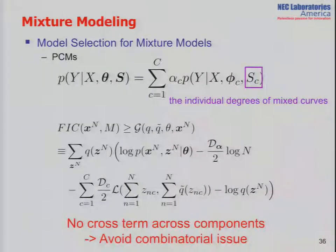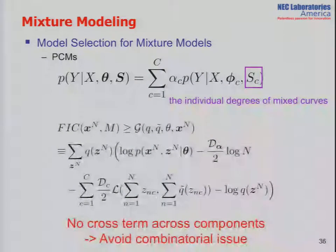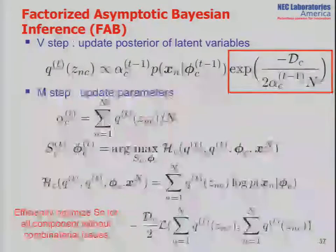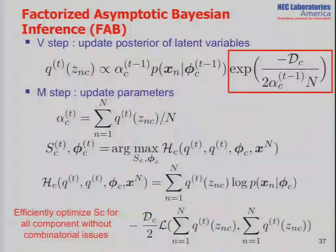Another example is polynomial curve mixture. With C fixed, we want to optimize the individual degrees of mixed curves. Our objective has no cross terms across components, so we don't need to consider combinatorial issues among components. We can individually optimize each component in the M-step, which reduces to solving a model selection problem for each component separately.